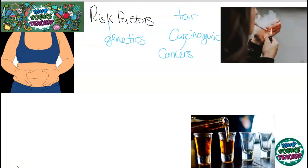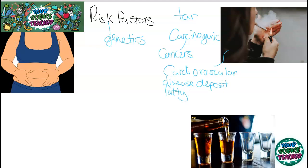Another disease that smokers often contract is cardiovascular disease. The reason why you're likely to get cardiovascular disease if you smoke is because cigarettes deposit fatty substances into your arteries. This can cause your arteries to clot and blood to not be able to flow, which can have massive effects on your heart.